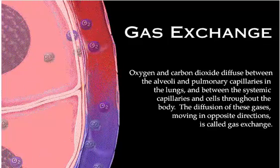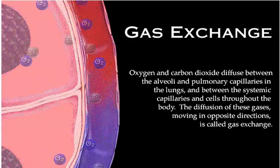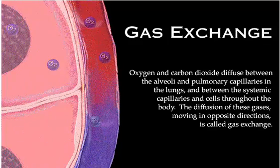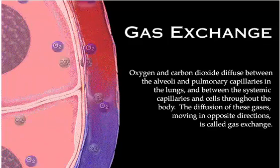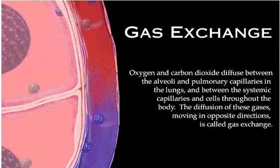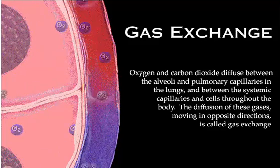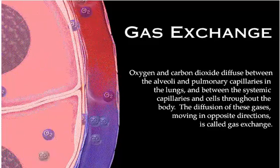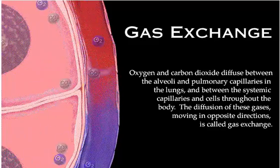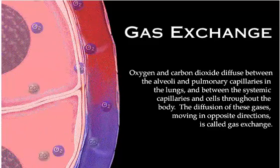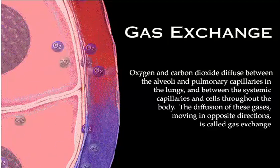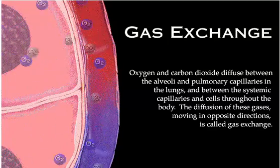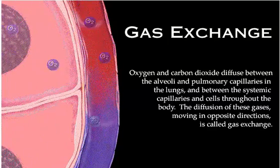Oxygen and carbon dioxide diffuse between the alveoli and pulmonary capillaries in the lungs and between the systemic capillaries and cells throughout the body. The diffusion of these gases, moving in opposite directions, is called gas exchange.